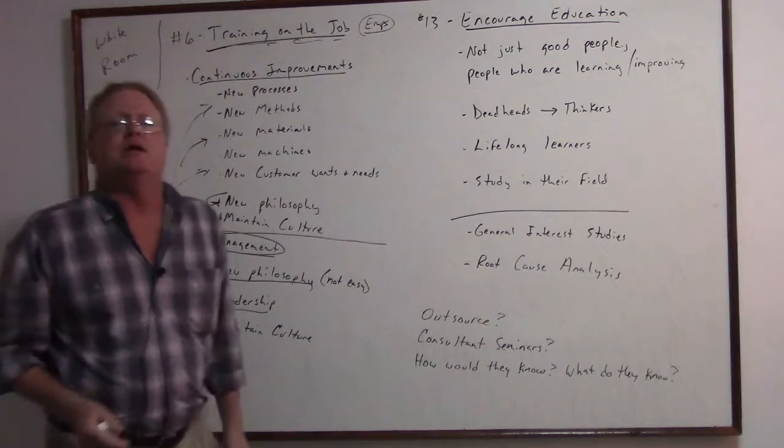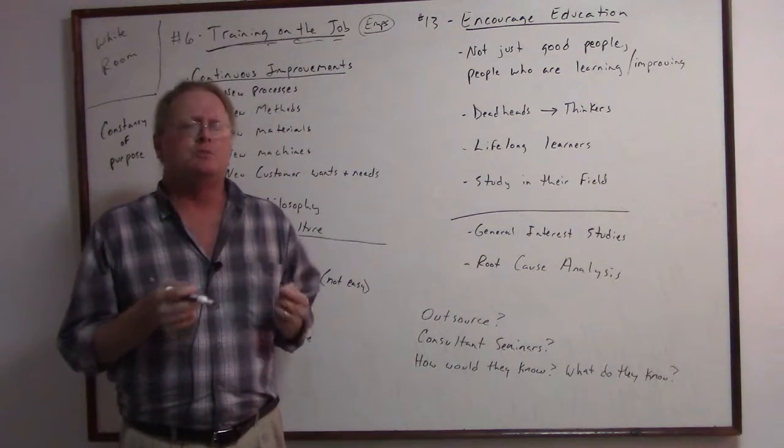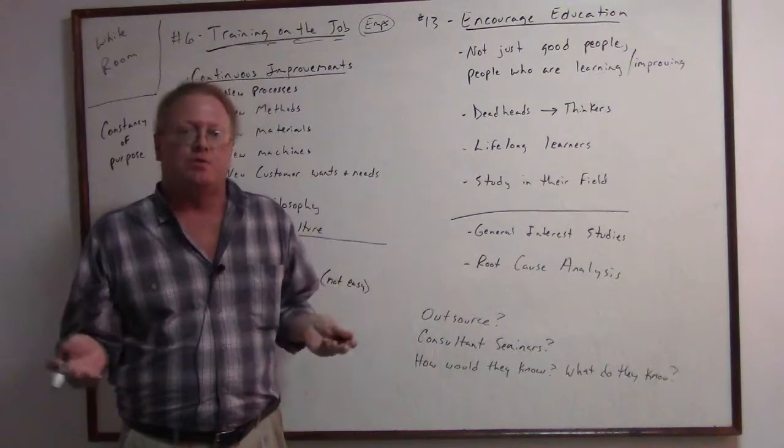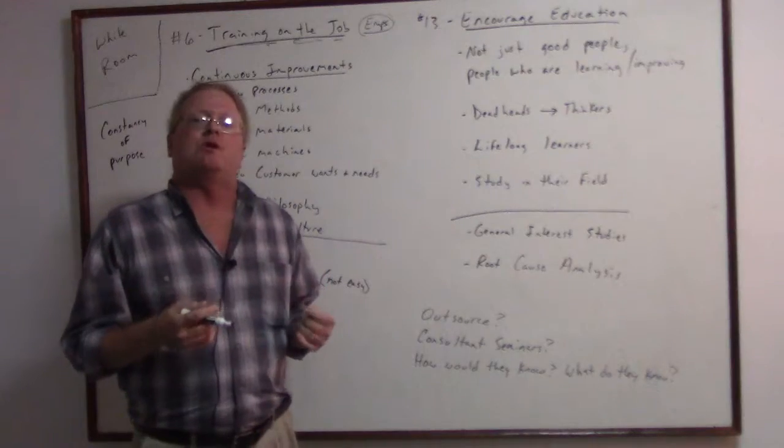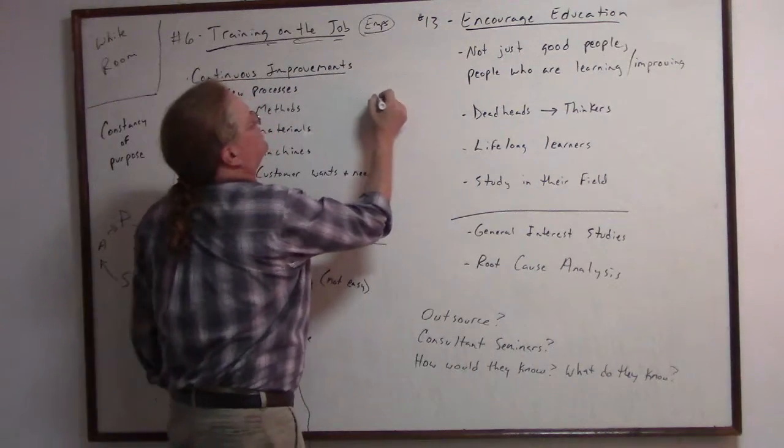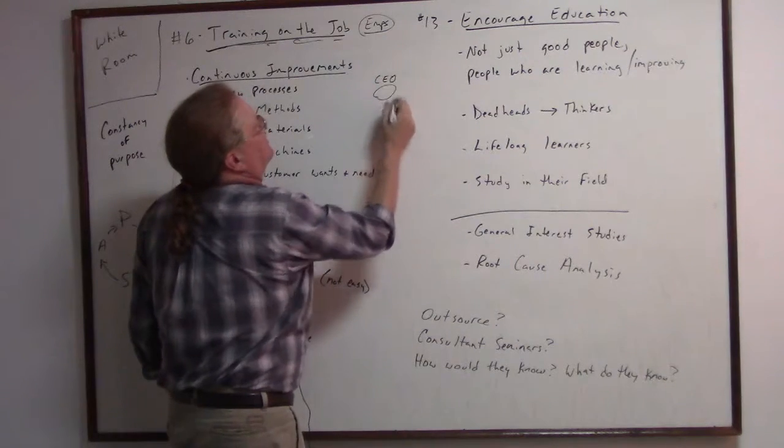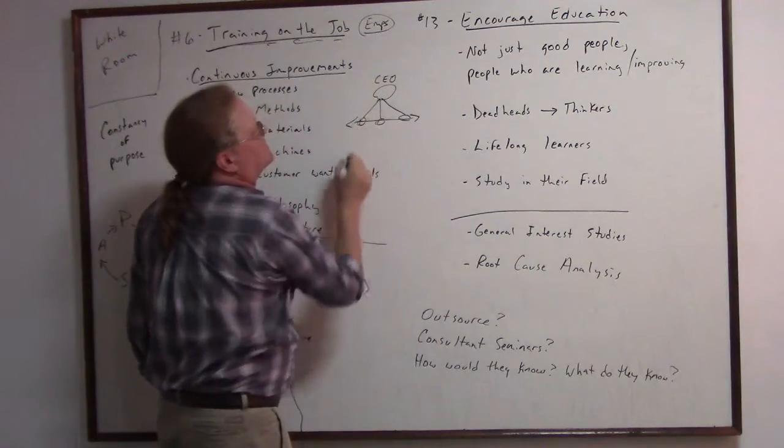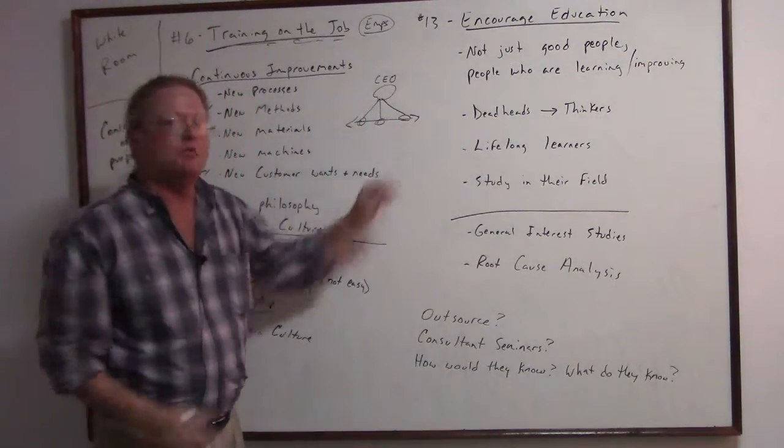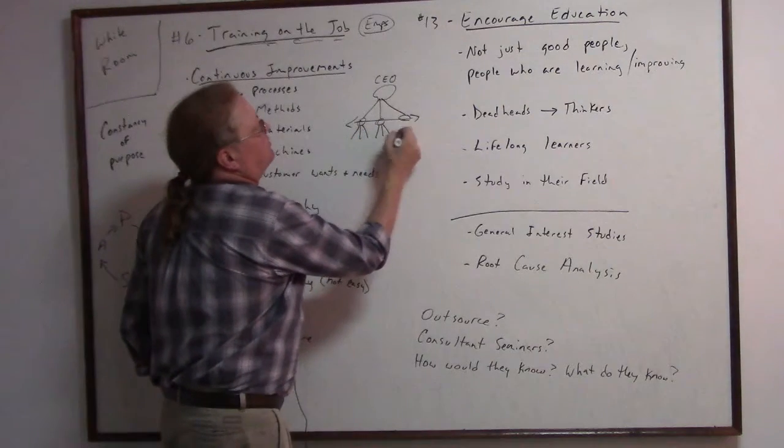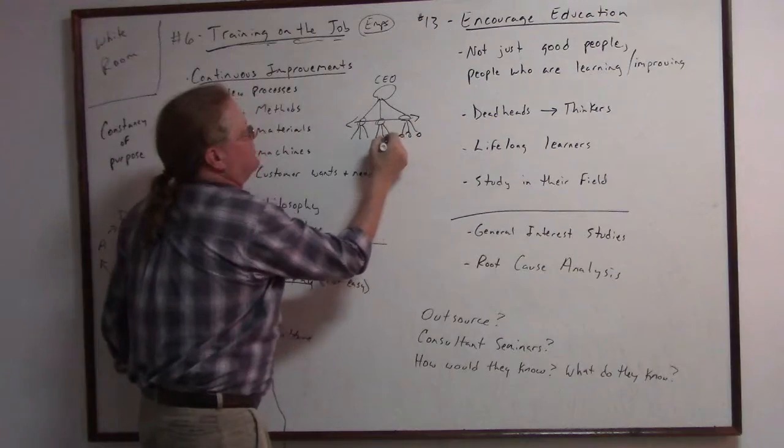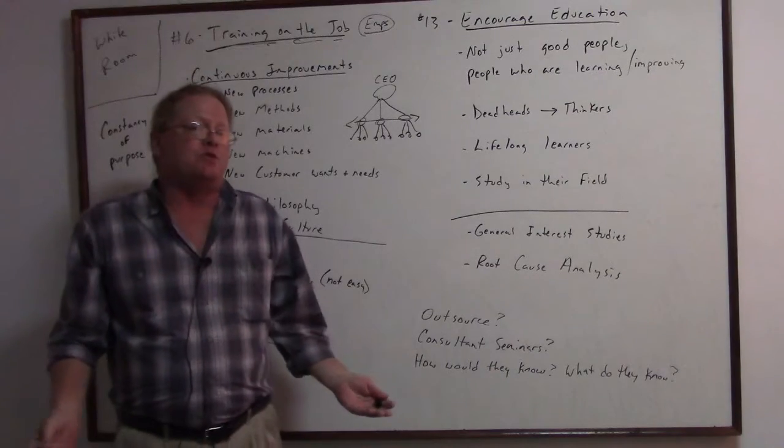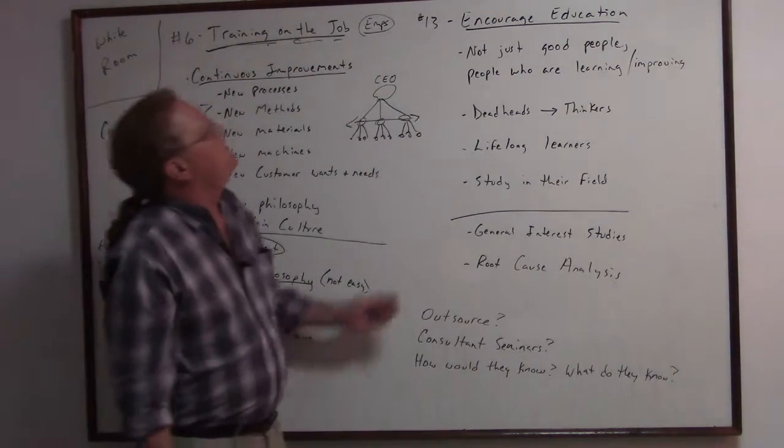We also need to work on leadership. Deming is calling for more leadership instead of management, and this doesn't come easy for everyone. It's very important to have the CEO involved in this business because we've got to have the consistency of the philosophy and the leadership across all the managers so they can influence the employees below them and help maintain the culture. They can't maintain a culture that they don't understand.